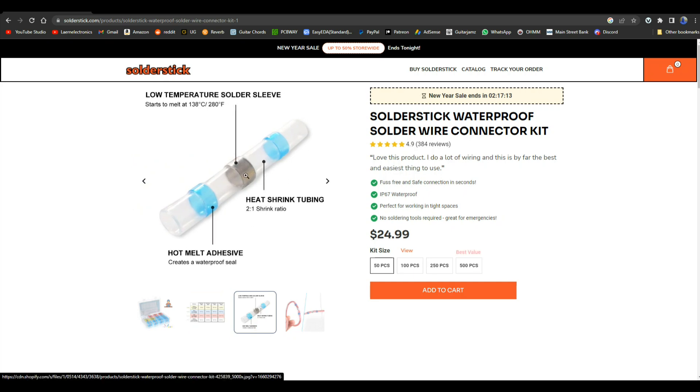It has a bit of a special solder that melts at 280 degrees Fahrenheit. Heat shrink tubing around it. Adhesive to hold everything together. You put your project together with these, you're probably going to be good to go for a long time. SolderStick. There's a link and a discount down below.